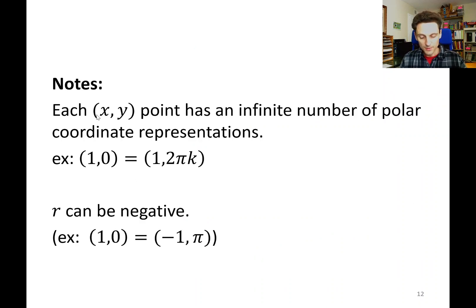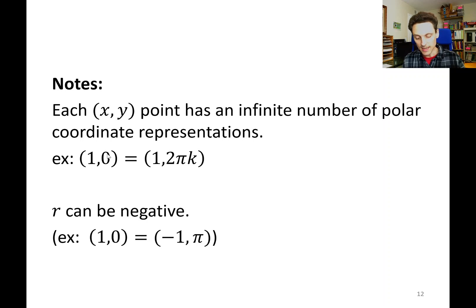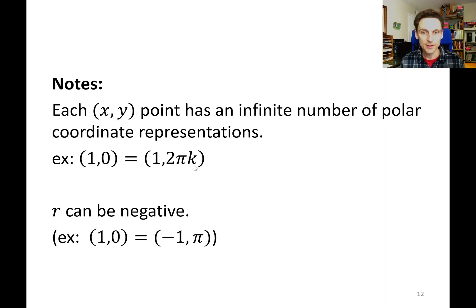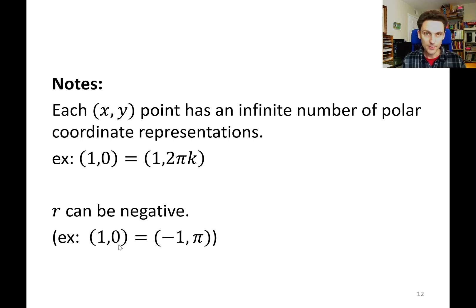A couple of notes. One is that each x-y point has an infinite number of polar coordinate representations. We can take any angle and add 2 pi as many times as we want and get the same exact point on the coordinate system. Also, r can be negative. So this means that (1, 0) — r equals 1 and theta equals 0 — is the same thing as (-1, π). They're the same point.